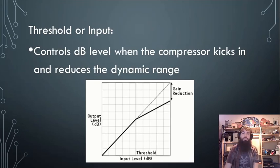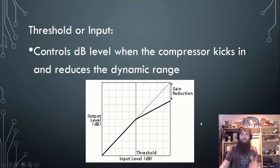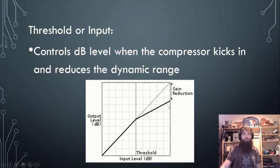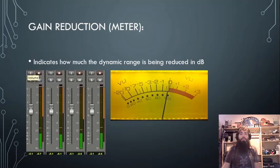Threshold — sometimes known as input — controls the decibel level at which the compressor kicks in to start reducing the dynamic range. If we've got our input level and we start to bring that threshold down, it's going to change the output level effectively.